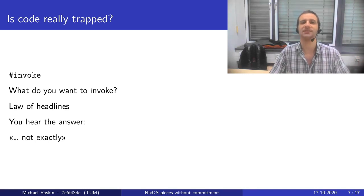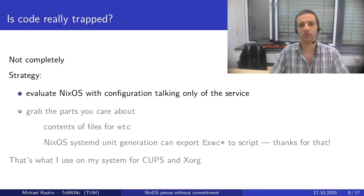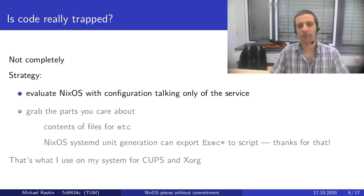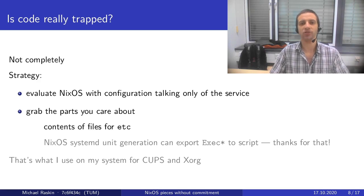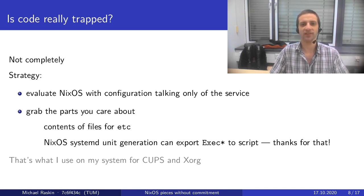One can ask: is this code really trapped? I invoke the law of headlines ending in a question mark. Well, it is complicated. There is a strategy to use all this code outside a mainline NixOS installation: you just evaluate NixOS as a Nix expression with a configuration that is minimal beyond minimal — not enough to build a bootable NixOS or even a container, only talking about the service itself. Then you grab the parts you care about, like the configuration files in /etc. Also, NixOS system unit generation has the ability to export the contents of exec stuff to a runnable script.